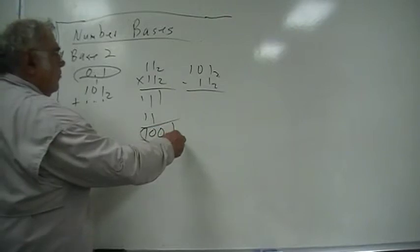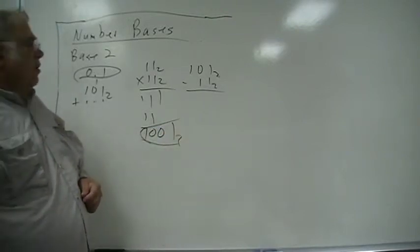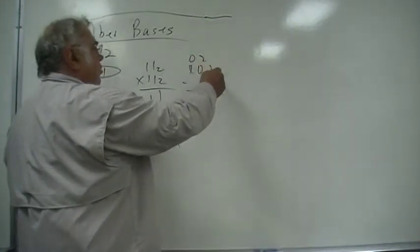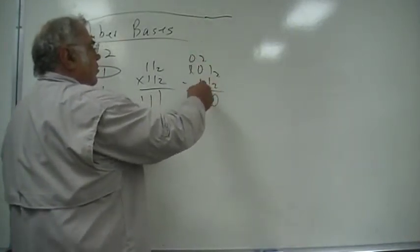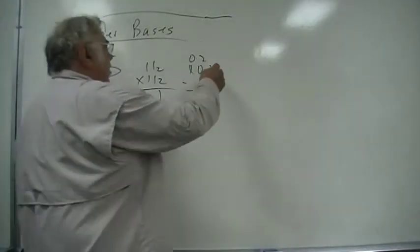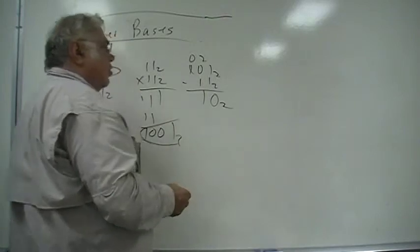Base two. Now to subtract in base two, what you borrow is two, since it's base two. One from two is one, so ten base two minus one base two is ten base two.